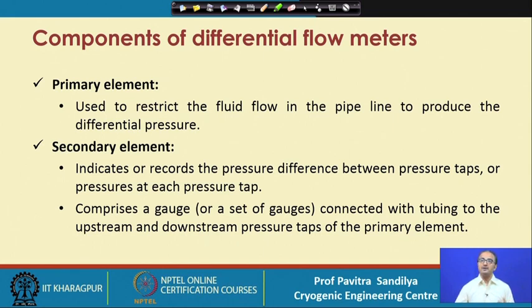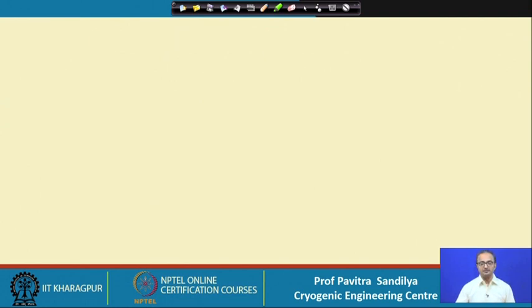Either I can have a differential pressure measuring device, or I can measure the pressure at the two pressure taps and take the difference — either way, a single gauge or a set of gauges constitutes the secondary element.